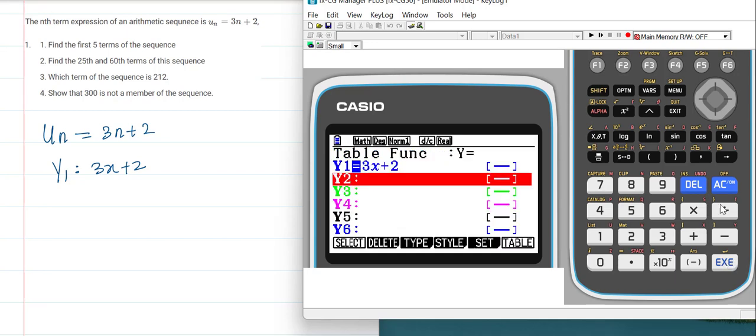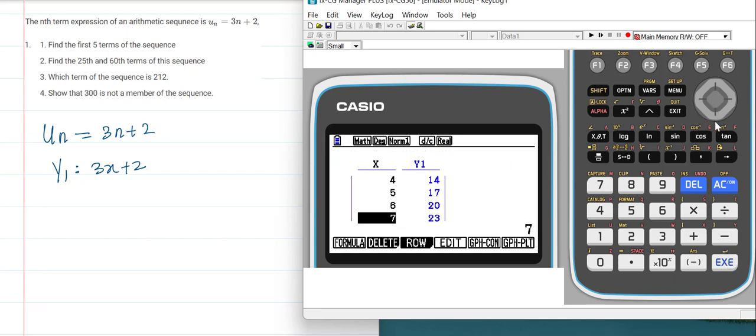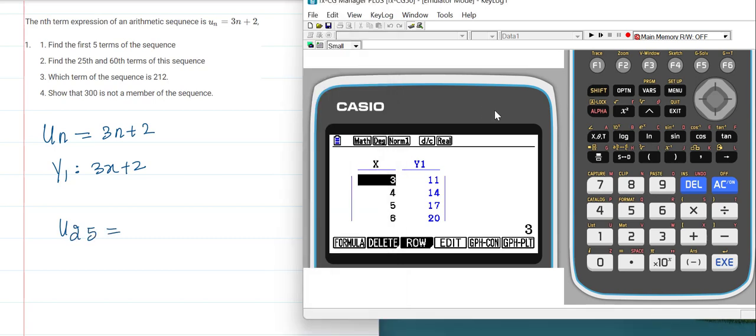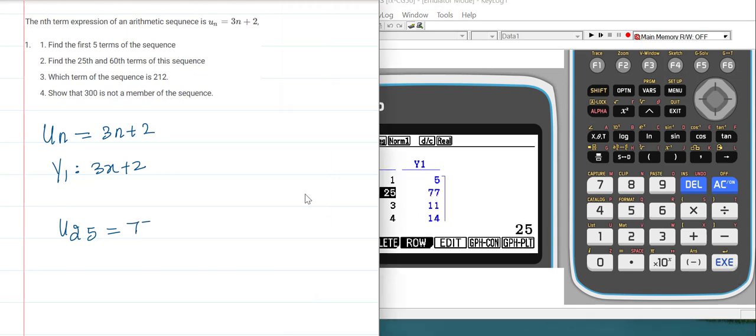Now if you want to find the 25th term, what you can do is just feed by keeping the cursor here in the X column and enter 25. It gets a value—U25 would be 77. And if you need to find the 60th term, same thing.